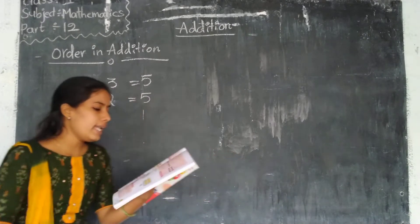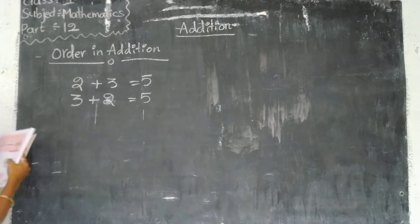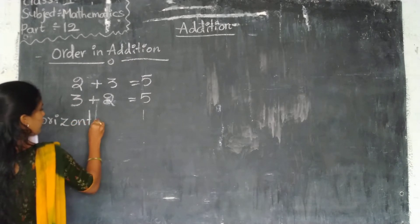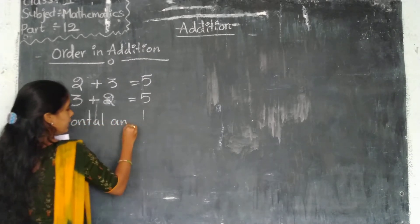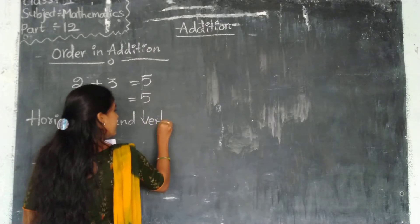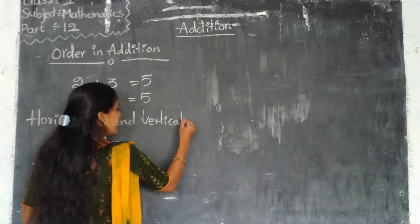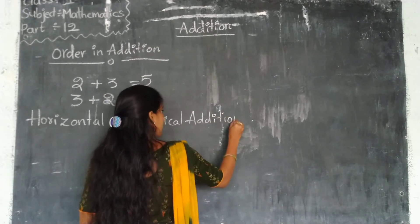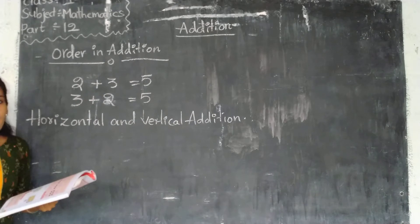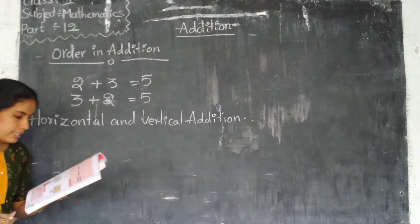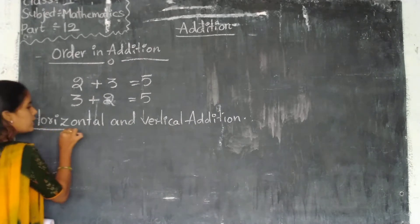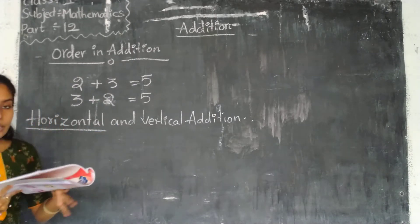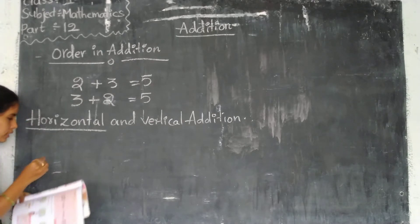Next topic: horizontal and vertical addition. What is the meaning of horizontal and what is the meaning of vertical? Let's see. First of all, we will look at horizontal addition. In this horizontal addition, how does it look?